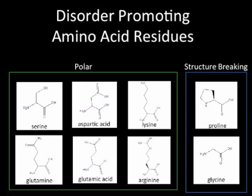For polar residues, serine and glutamine are uncharged; aspartic acid and glutamic acid are negatively charged; and lysine and arginine are positively charged. Proline is considered structure-breaking because the bulkiness of its side chain brings about steric hindrance in the helix, whereas glycine's side chain does not protect the backbone of the helix.